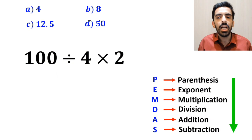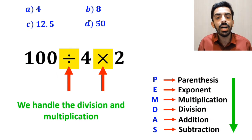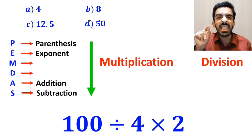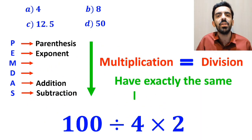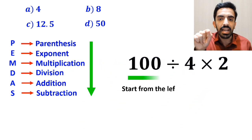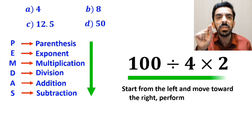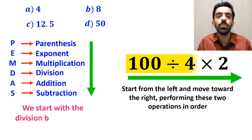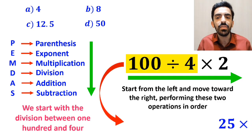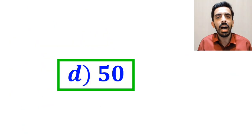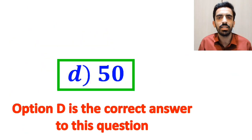In the final step, we handle the division and multiplication. It's very important to note that according to the PEMDAS rule, multiplication and division have exactly the same level of priority. The best approach is to start from the left and move toward the right, performing these two operations in order. So we start with the division between 100 and 4, giving us 25 multiplied by 2, which finally gives us the answer 50. Therefore, option D is the correct answer to this question.